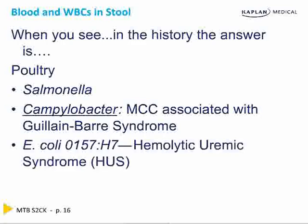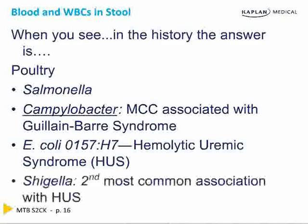E. coli O157:H7 — when you see hemolytic uremic syndrome, don't expect them to always say hemolytic uremic; they'll probably describe it: fragmented cells, low platelets, and high BUN/creatinine. The answer is most likely hemolytic uremic syndrome. The second most common cause is Shigella — Shiga toxin does it too.